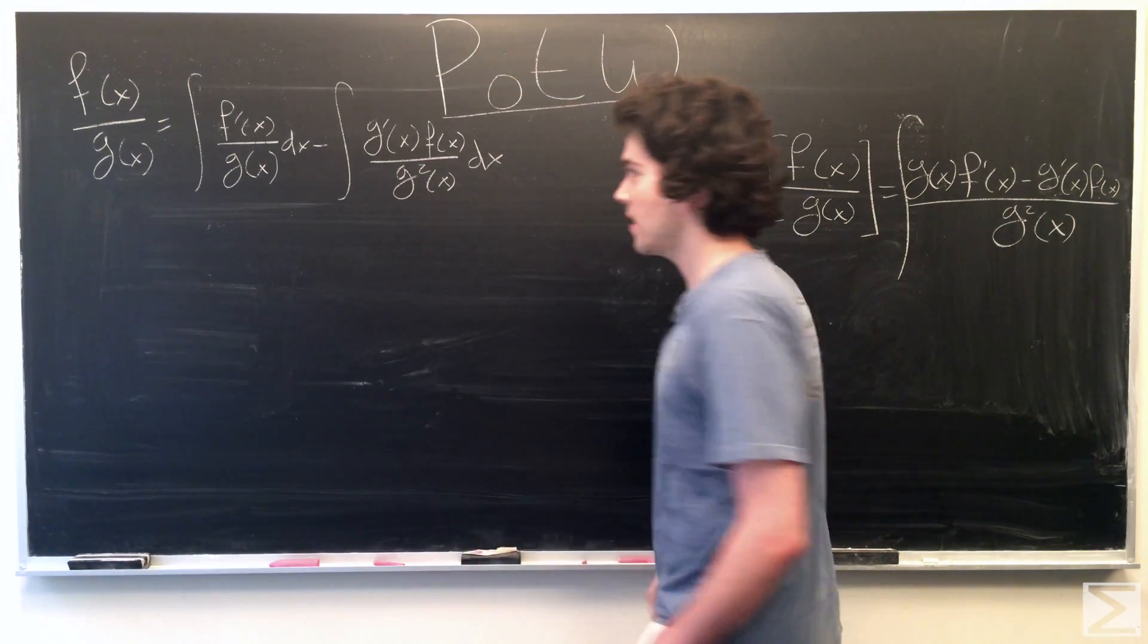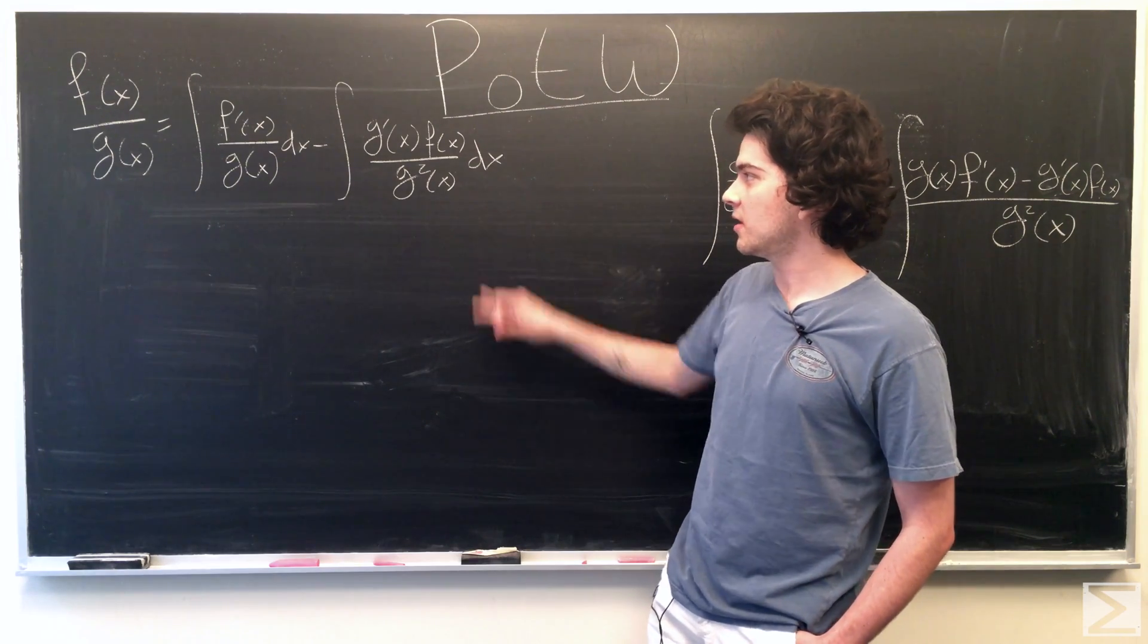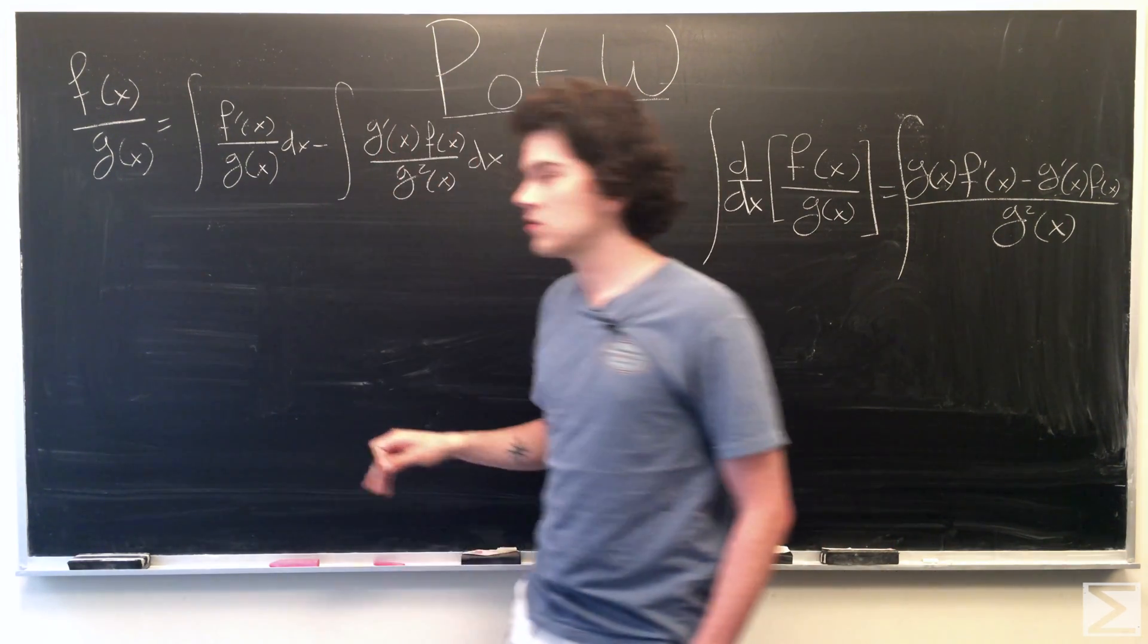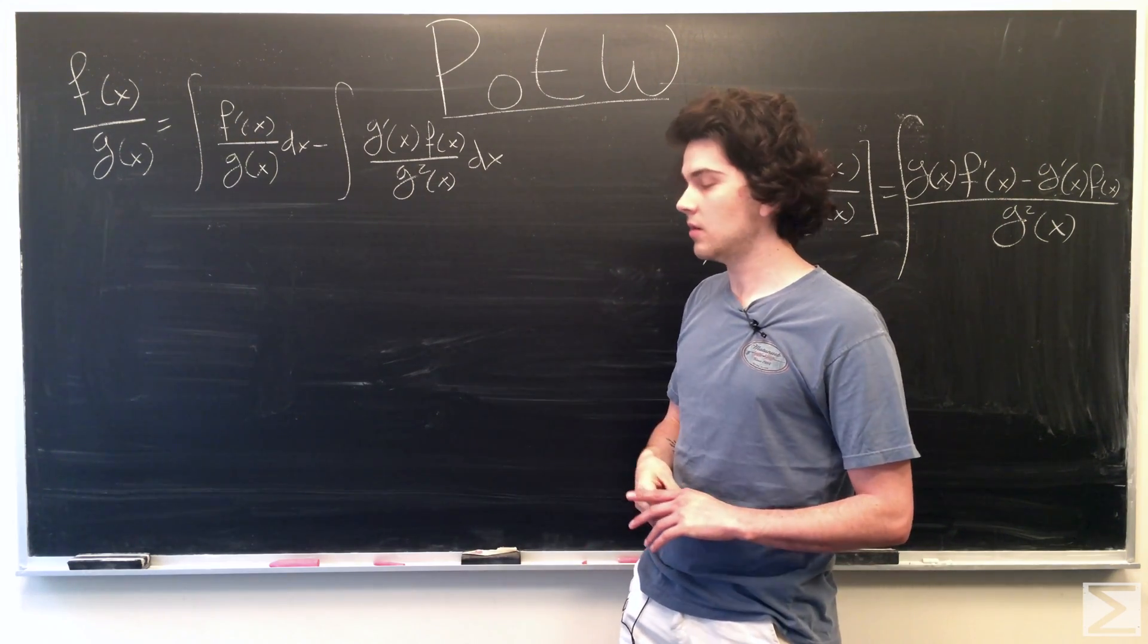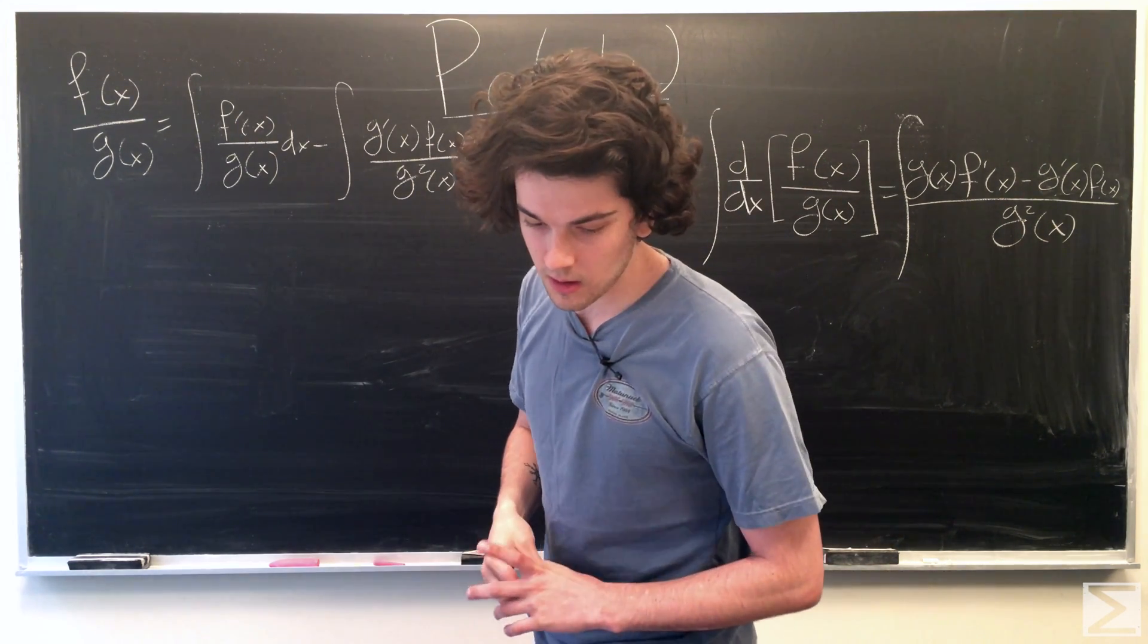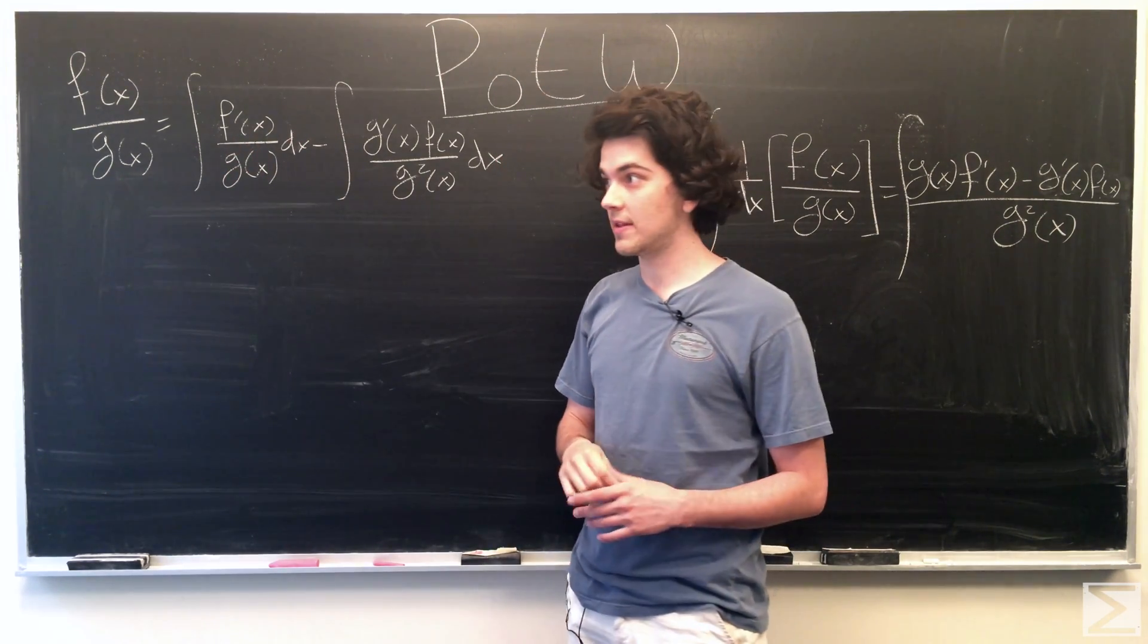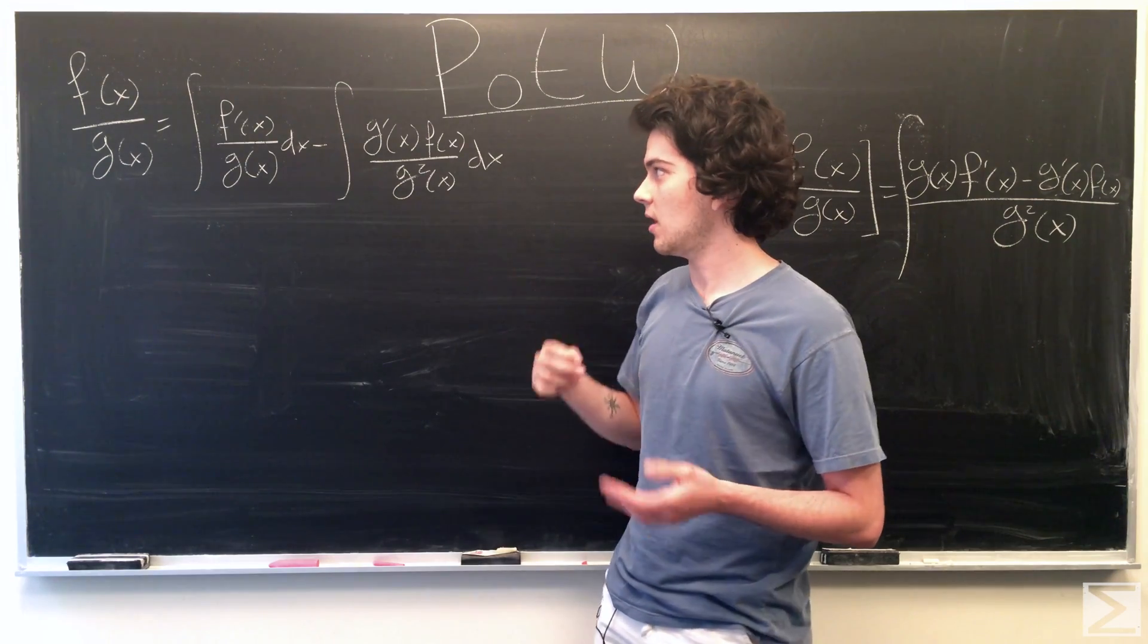So, now we have kind of a more simplified version of what we have here after we integrate. So, we're just going to substitute in U as g of x and v as f of x, so that it's a little easier to work with and see what's going on.